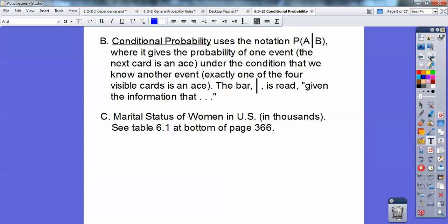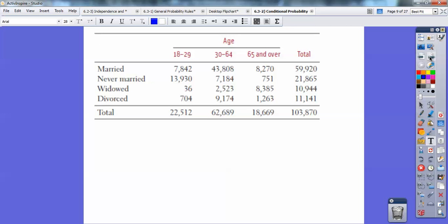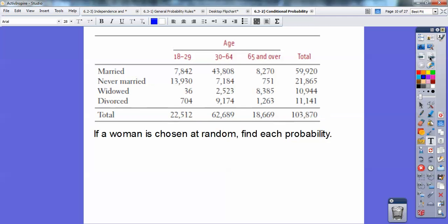I got this data from Table 6-1 at the bottom of page 366 on marital status of women in the United States, and this is in thousands. Here it is, all this data right here. Let's go ahead and do some calculations.